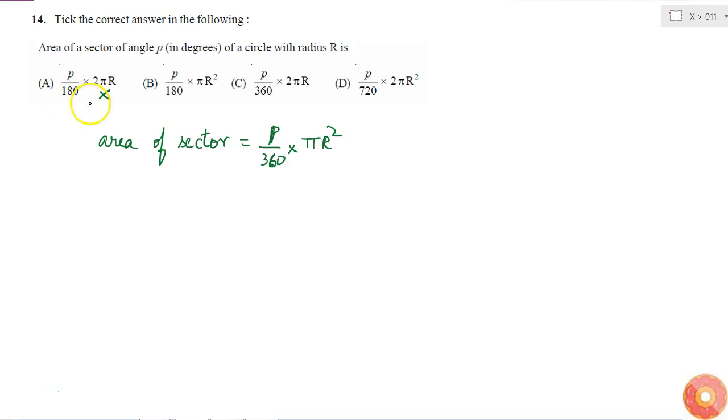And here I have pi R square term but it should be P by 360, but here it is P by 180. So this is actually double the area of the sector, so this is also not my answer.